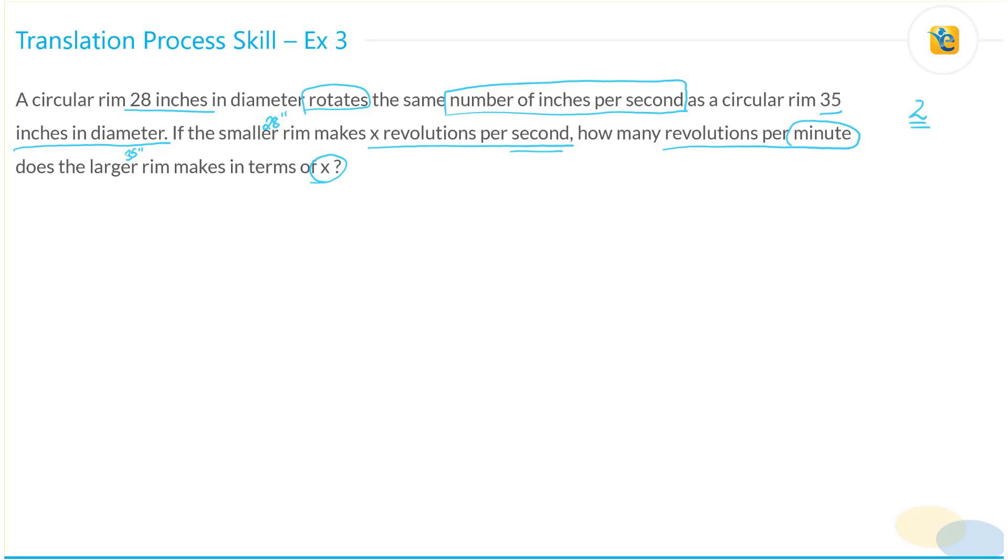We need to find the revolutions per second of the larger rim. We may have to go back reading the information, but let's capture what we have. I'm going to pick up first this part: X revolutions per second of the 28 inch rim. Once you read the question statement, it's okay to go back and take up one part at a time to do the translation.